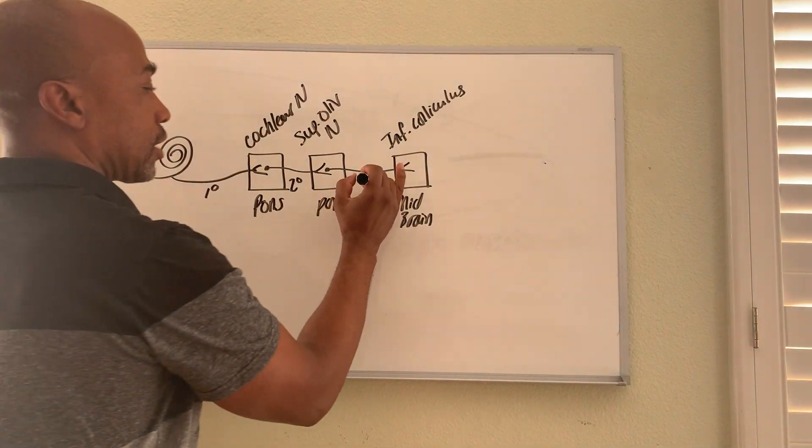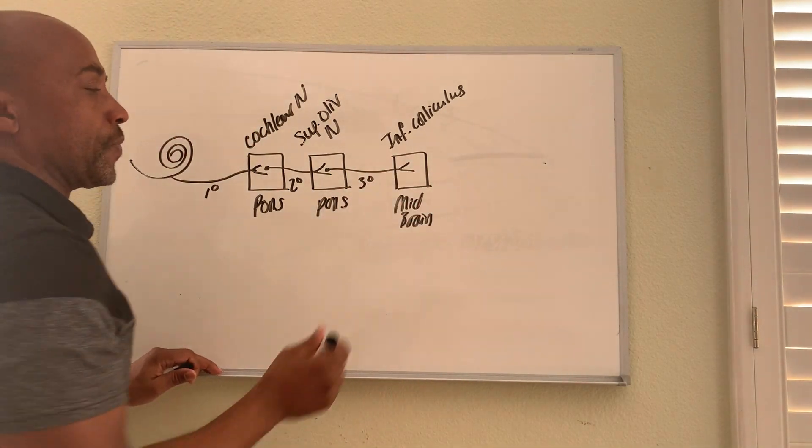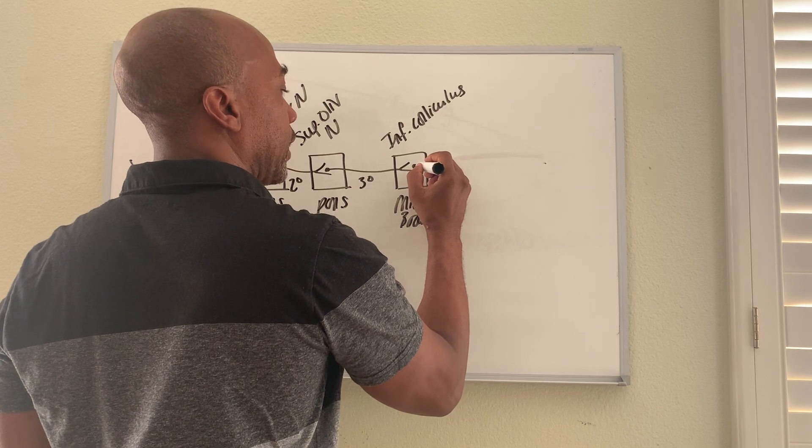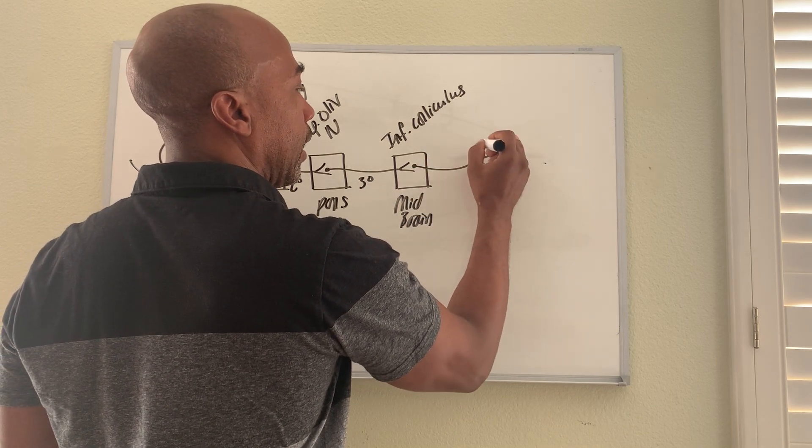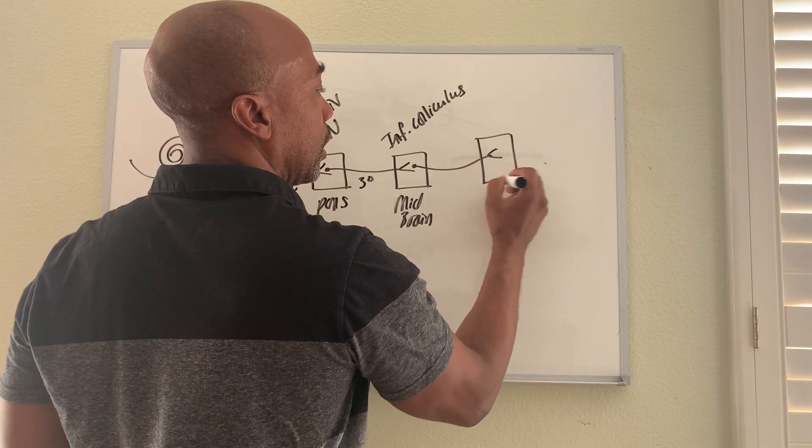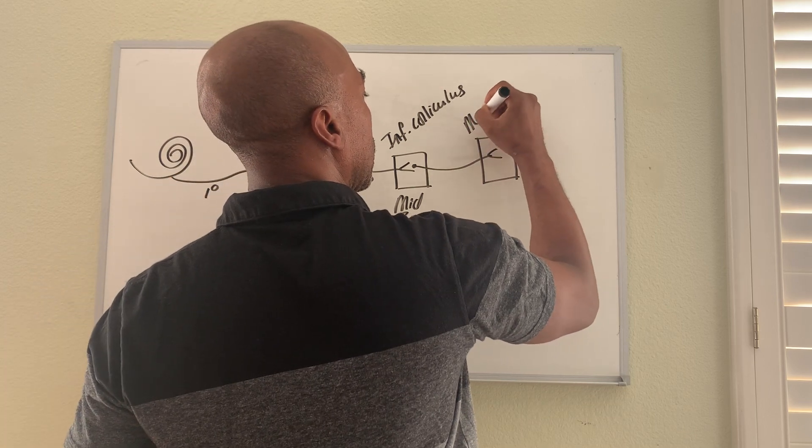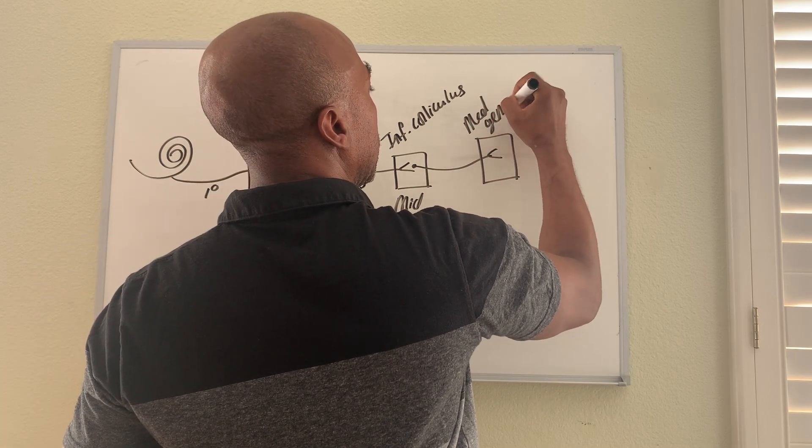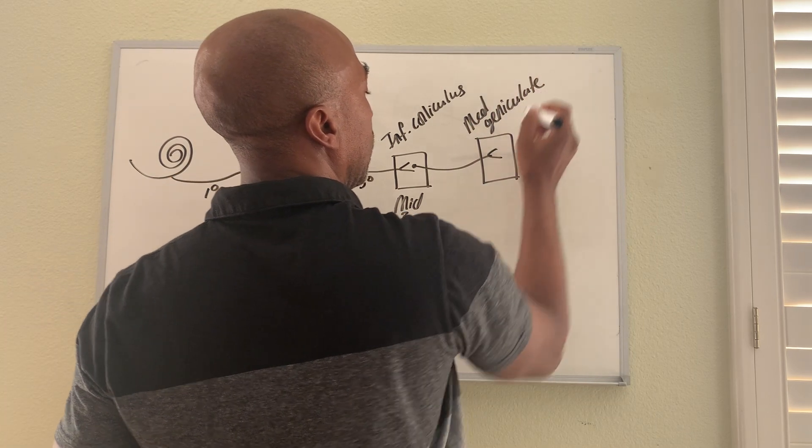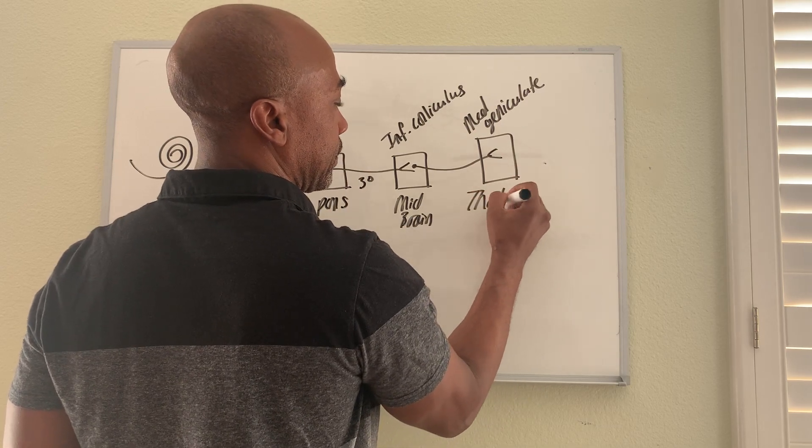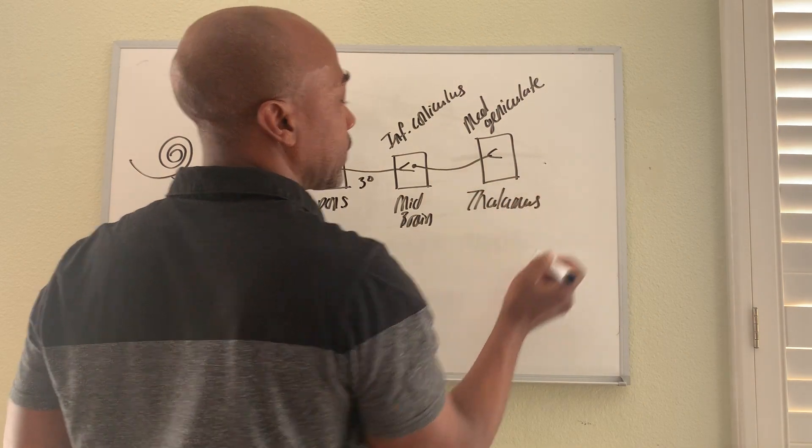And then a fourth neuron shoots from there up to your medial geniculate of the thalamus and stops.